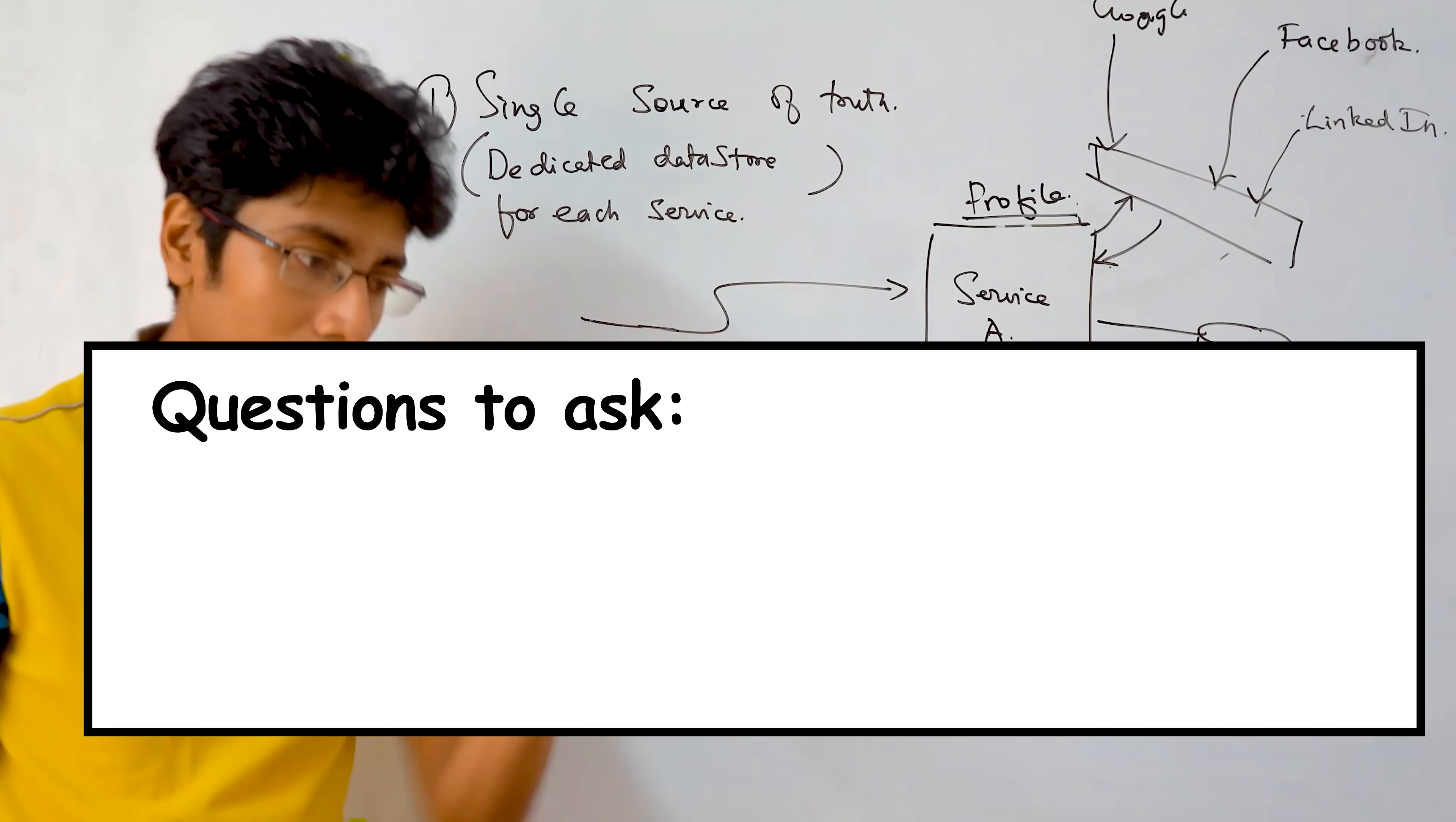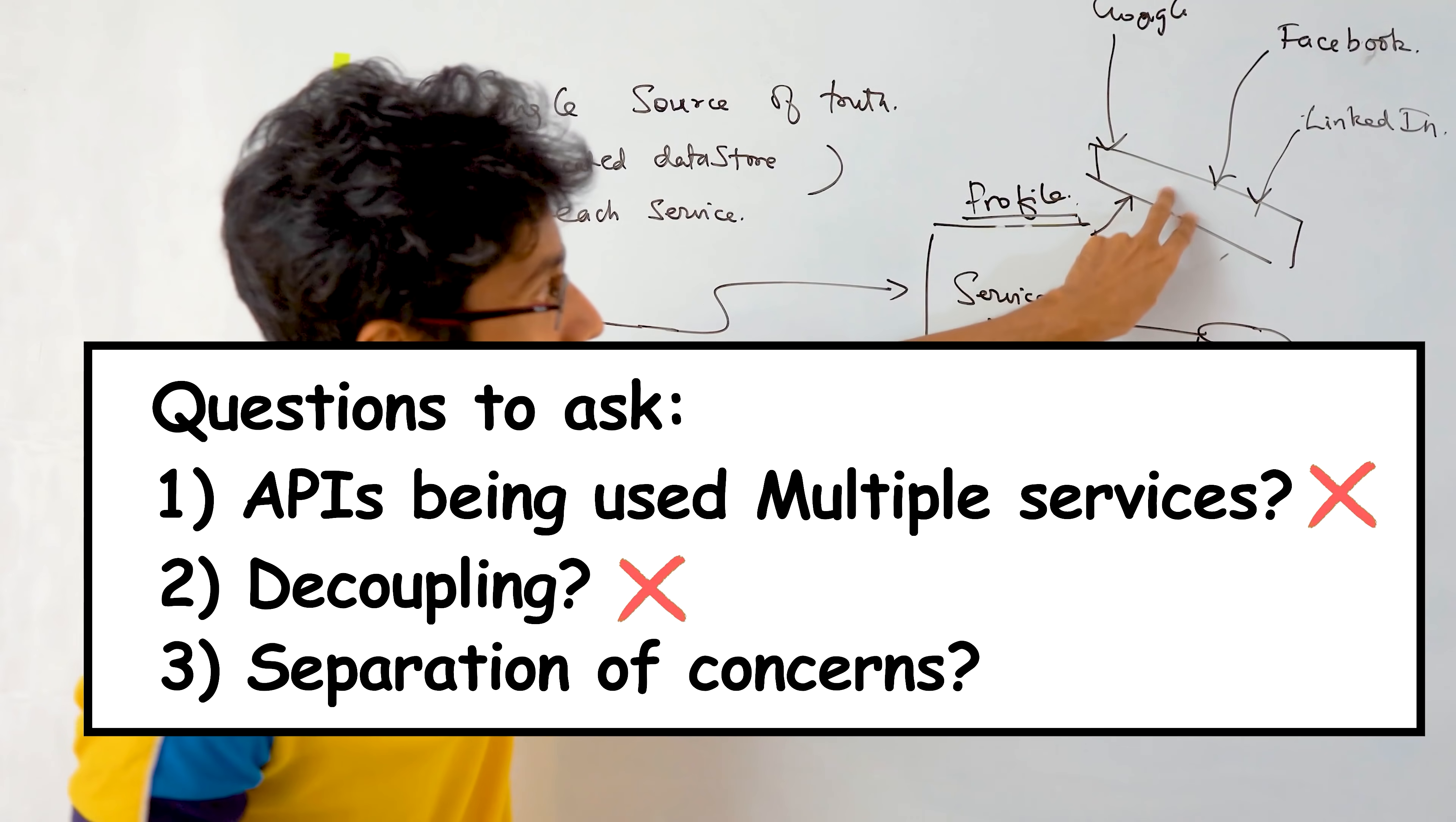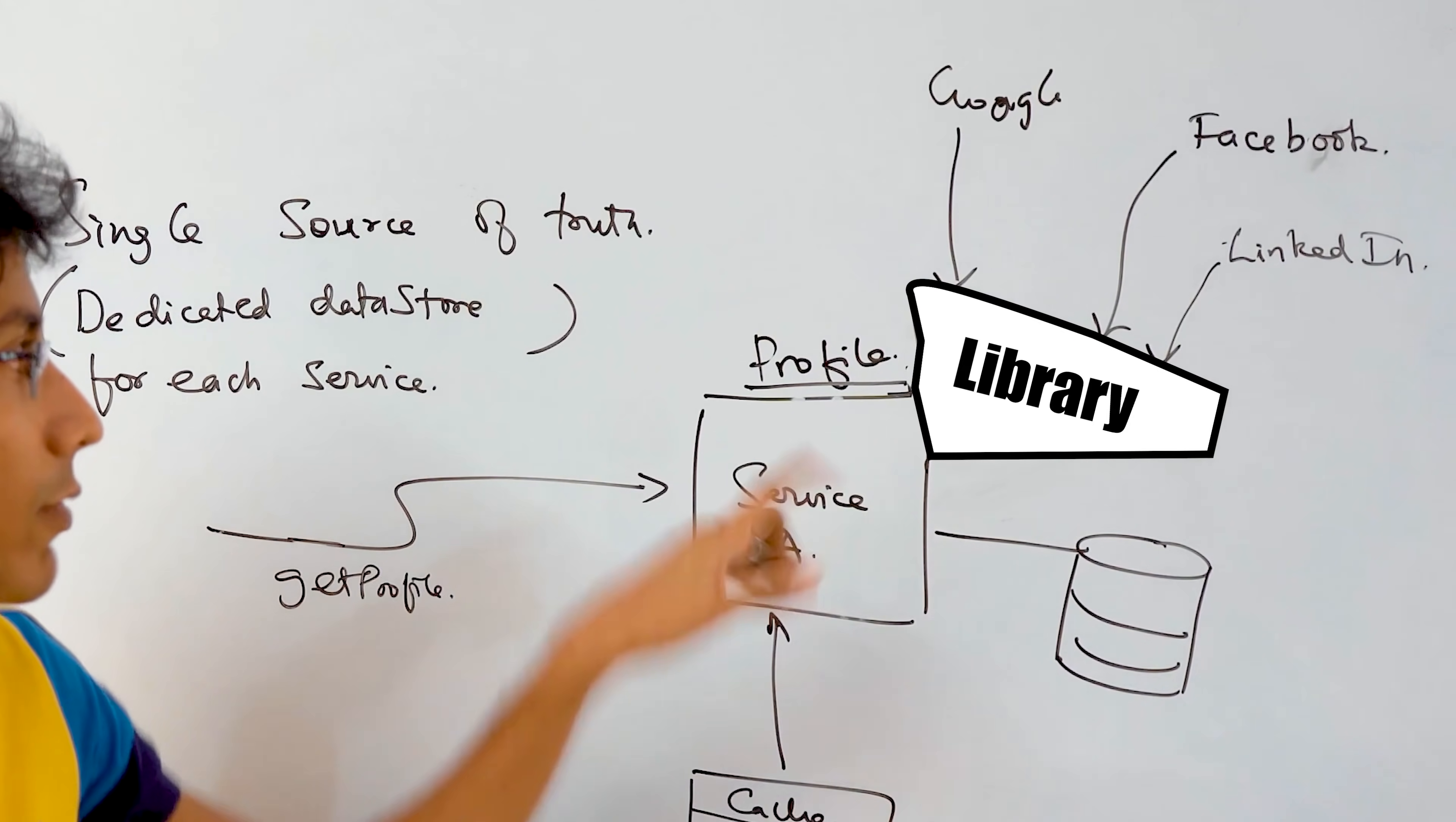is this data being used by any service except the profile service? No. When there is a change in profile service requirements, is there a change in the service requirement? Most likely yes. And is this business functionality, is the business requirement of this separate from the profile service business requirement? No. So what should ideally happen then is that this should be a component of the profile service. You can make a library out of this. You can put it in the utils package. That's a separate thing.